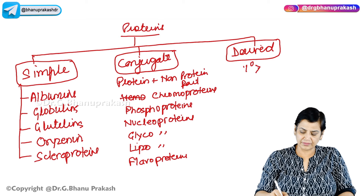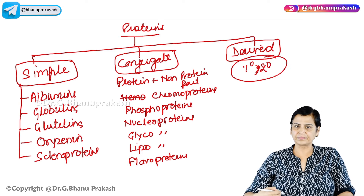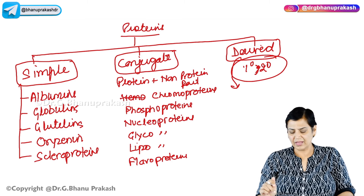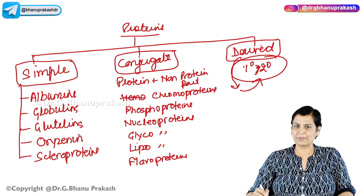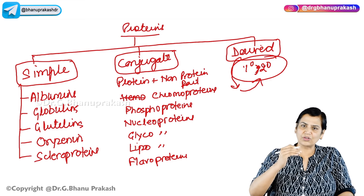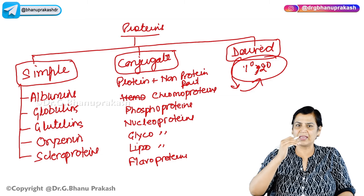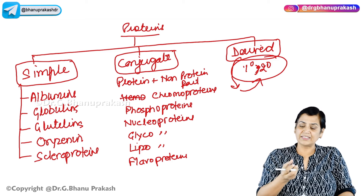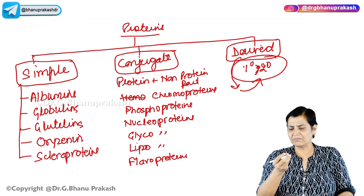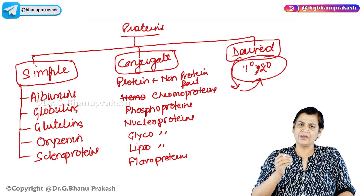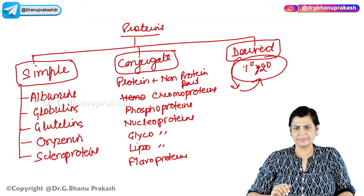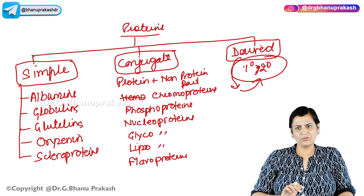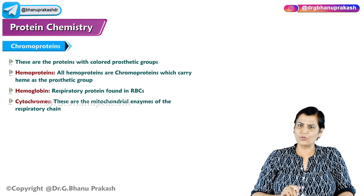The last class is derived proteins. As the word implies, they are derived from primary or secondary proteins — either from simple or conjugate proteins. As degradation starts, polypeptides break down into peptones and dipeptides. For example, elastin becomes elastan, and myosin can form metmyosin when treated.